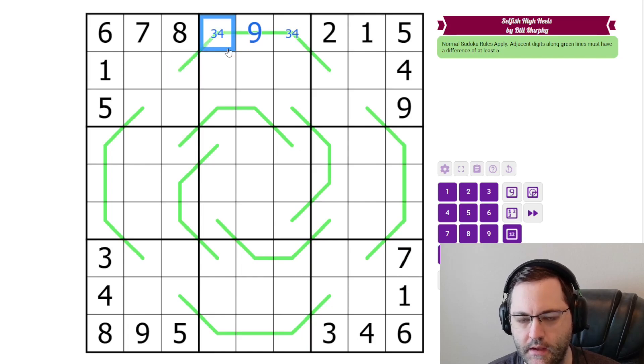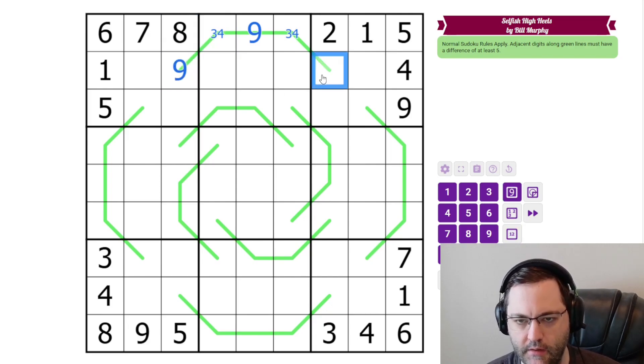Now on this side, three can go next to eight or nine, four can only go next to nine. There's already an eight in this box, so this is going to have to be nine. And now, because this is nine, this can't be nine, and there's a nine in the box, this has to be eight, and that's going to resolve this. The four has to go next to the nine, three has to go next to the eight.